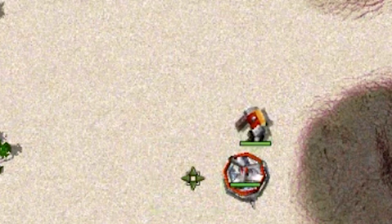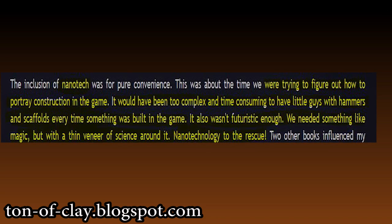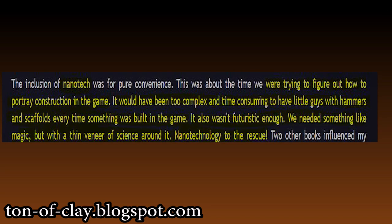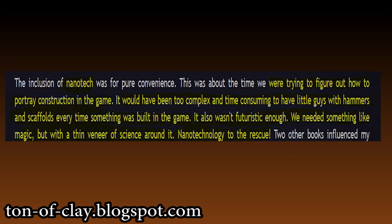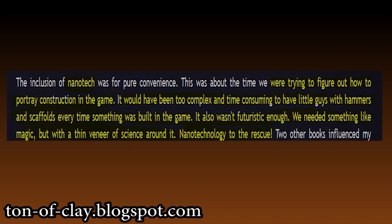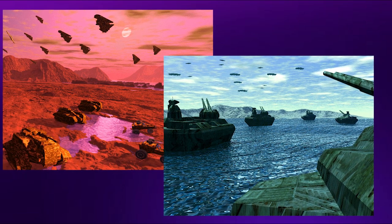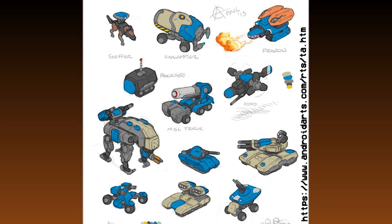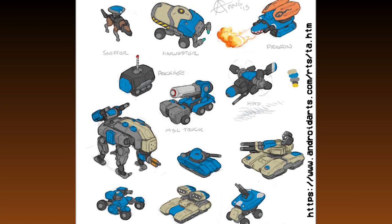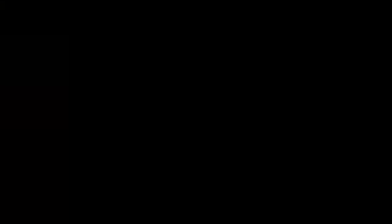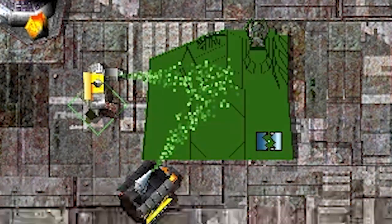Kozlerik explains on his blog how the decision for nanotechnology was made: "At the time we were trying to figure out how to portray construction in the game. It would have been too complex and time-consuming to have little guys with hammers and scaffolds every time something was built. It also wasn't futuristic enough. We needed something like magic, but with a thin veneer of science around it — nanotechnology to the rescue." The game had a variety of units for both sides, ranging from infantry, vehicle, ship and air. Simple units could be pumped out quickly while larger, tougher units took more minutes to build. Total Annihilation also implemented the possibility to increase production speed by having multiple construction units simultaneously build the required infrastructure.